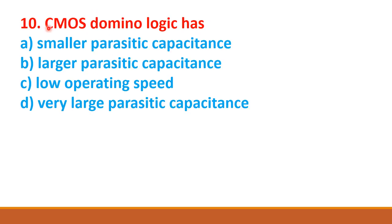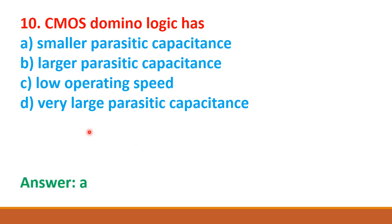Next question: CMOS domino logic has — option A: smaller parasitic capacitance, option B: larger parasitic capacitance, option C: low operating speed, option D: very large parasitic capacitance. The correct answer is option A: smaller parasitic capacitance.